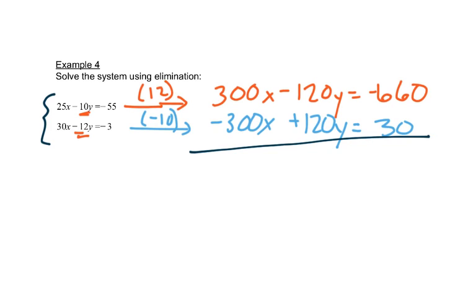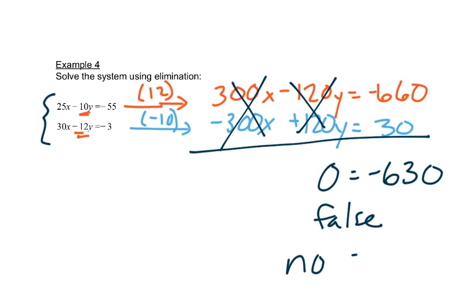So now let's look at what happens when I add these together. This cancels out and this cancels out. It leaves me with 0 equals negative 630. This is a false statement. The variables are gone, which tells us there's no solution.